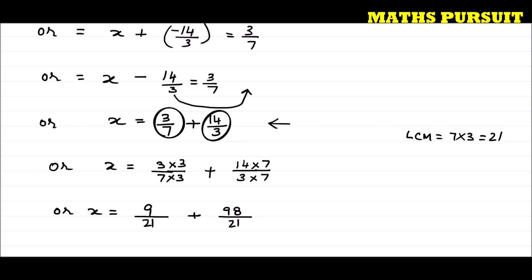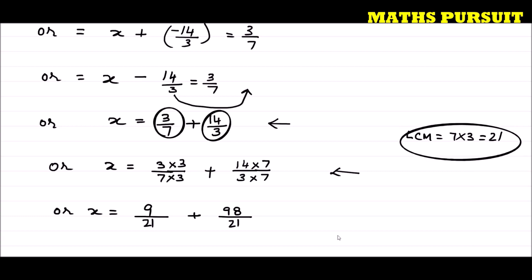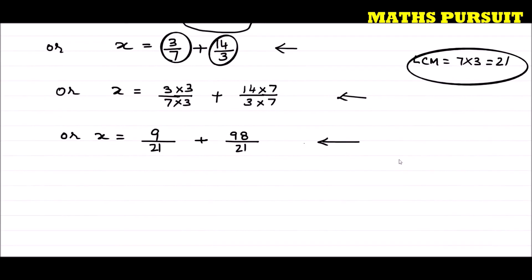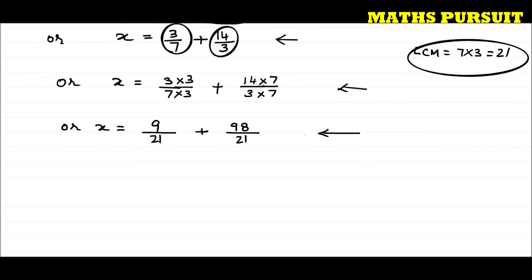Hope guys we are very clear till here. In this line we made the denominator 21 because the LCM is 21, so that we can easily add the two numbers. So x is equal to 9 plus 98 upon 21, which gives x is equal to 107 upon 21.